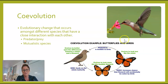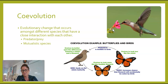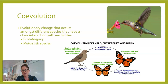Coevolution can happen in many circumstances. Here you have a bird with a long beak and a really deep flower where you need a long beak to reach the nectar. That is coevolution of the flower and the bird. This happens a lot with pollinators and flowers — they coevolve together.